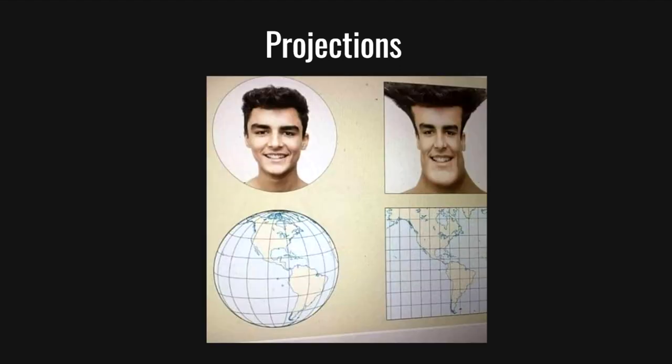Map distortion is an unavoidable result of map projections. Because the Earth is a sphere, it is impossible to fully represent it on a flat surface without some sort of distortion. Different projections will result in different types and levels of distortion. For example, a person's hair and neck can be stretched out and enlarged when projected from a globe to a 2D plane, just as polar regions are distorted and enlarged on certain projections such as the Mercator projection.